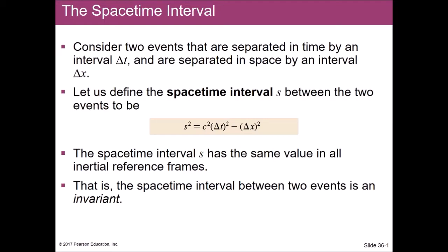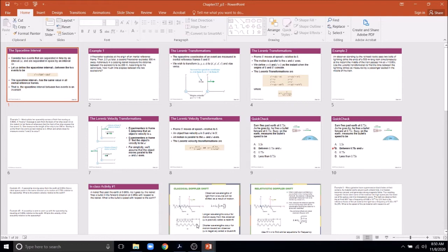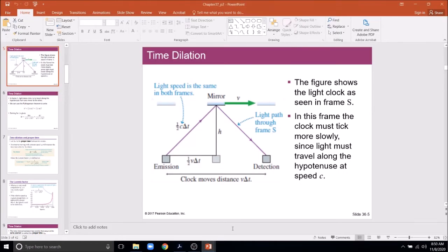To see what this equation is and how it works, let's go back to our light clock example. The picture shown here is a view of the light clock from the S frame — the ground frame — watching the clock move to the right. To establish the Lorentz factors, we looked at the triangle formed by the light path. The hypotenuse represents the distance light travels, C·ΔT. The base is V·ΔT — the distance the clock moves — and H is the distance the light travels up to the mirror.